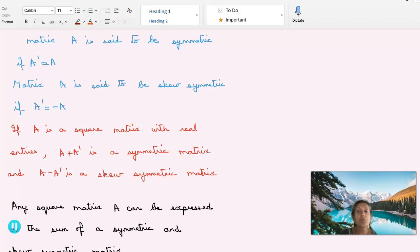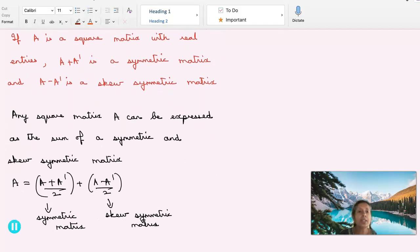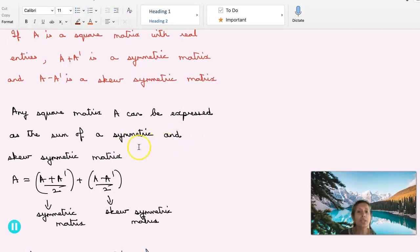And based on this, we have a very important formula, and that is any square matrix A can be expressed as the sum of a symmetric and skew symmetric matrix. How will you do that? You write it as A plus A transpose by 2. You start with A. You write A as A plus A transpose by 2. This is the symmetric part, plus A minus A transpose by 2. This is the skew symmetric part. This is a very important formula and used very often in problems.